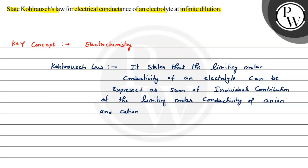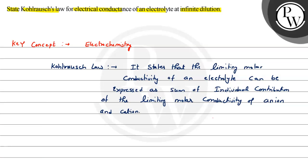This is the basic definition of Kohlrausch's law. If I write the mathematical equation, the limiting molar conductivity at infinite dilution equals the limiting molar conductivity of the cation plus the limiting molar conductivity of the anion. For example, for NaCl, I can write: limiting molar conductivity of Na⁺ plus limiting molar conductivity of Cl⁻.